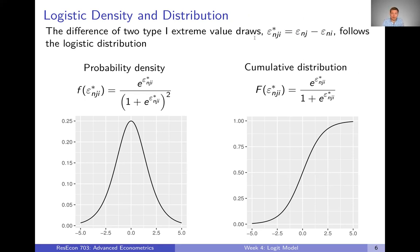Well, epsilon star is a difference between two random variables. It is itself a random variable, and it follows the logistic distribution. And this is actually where the name logit comes from. Logit is just kind of a shortening of logistic. And so the difference between epsilons, which is what we really care about, is distributed logistic or logit.